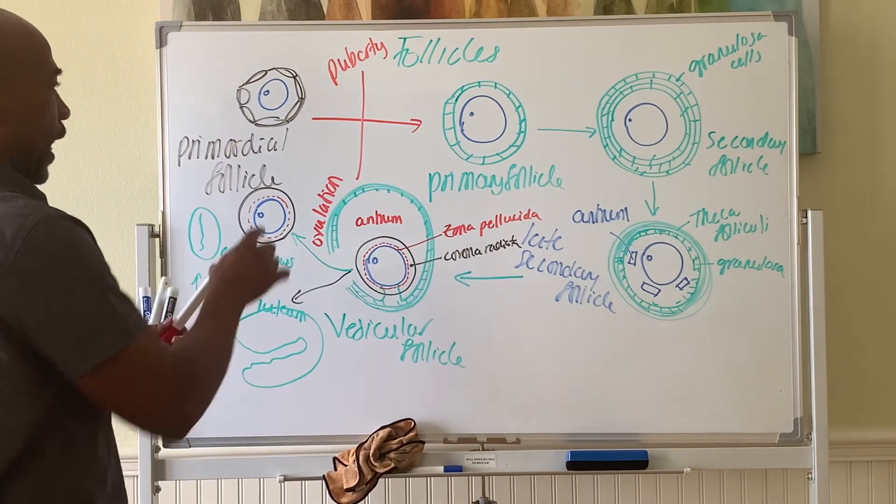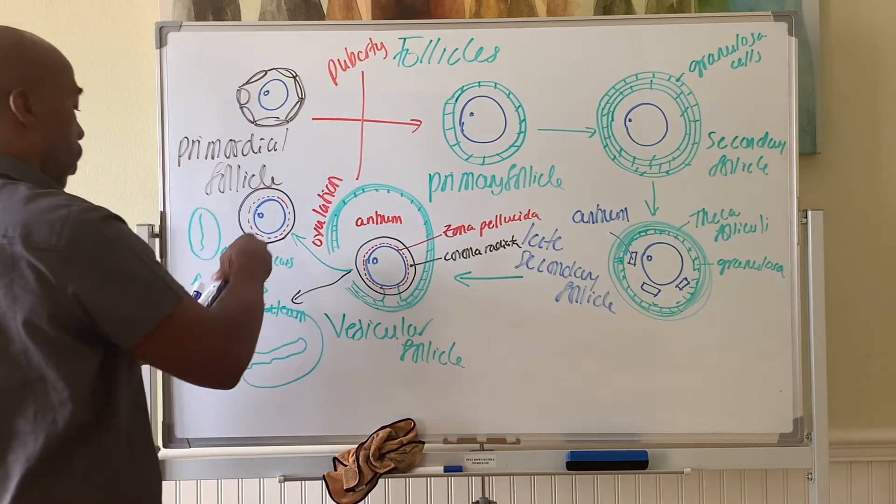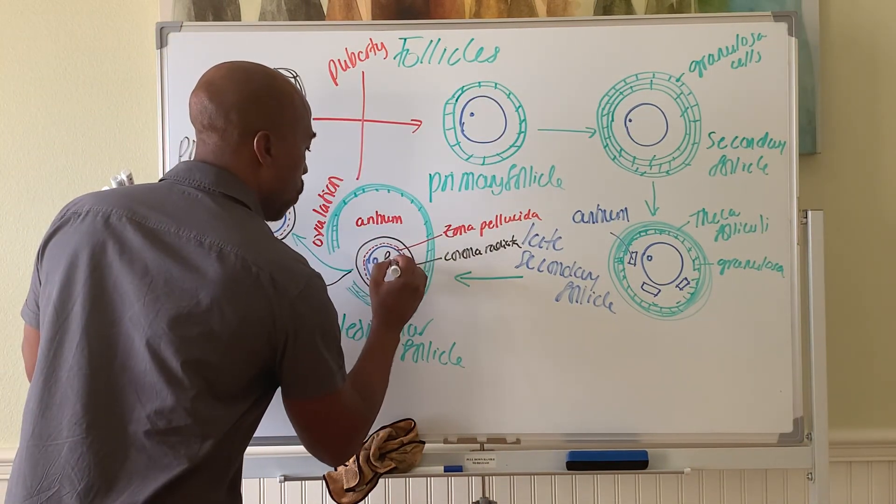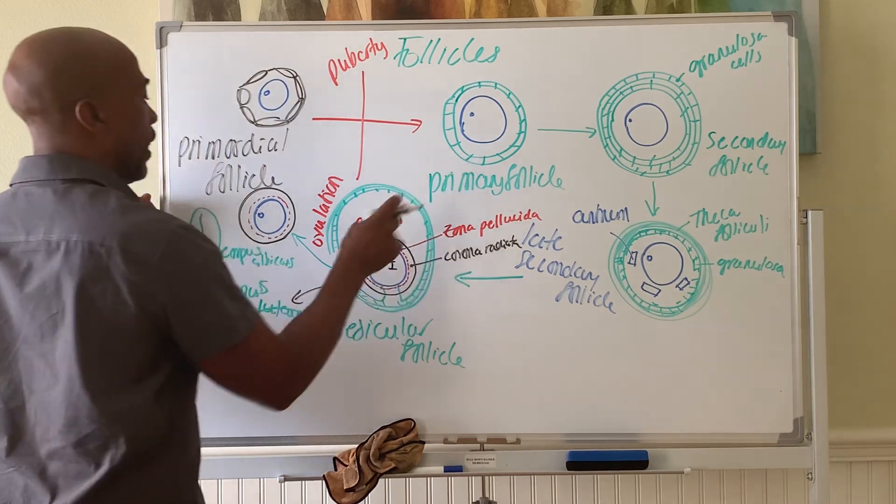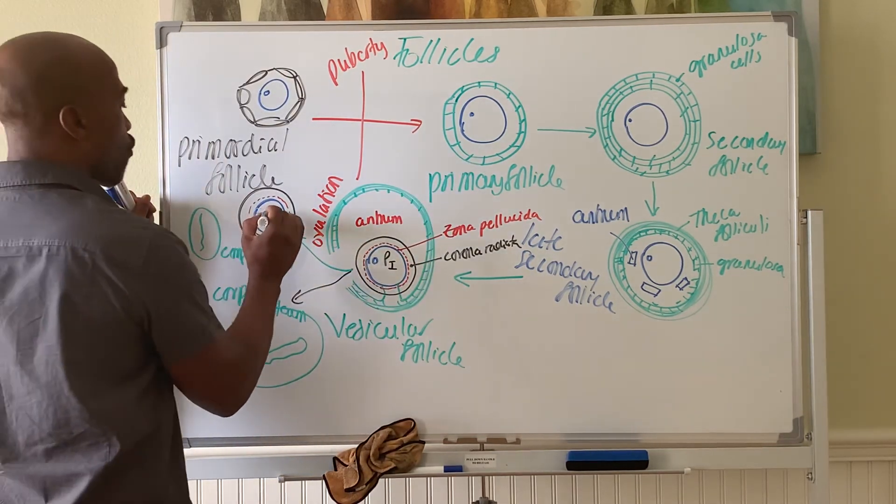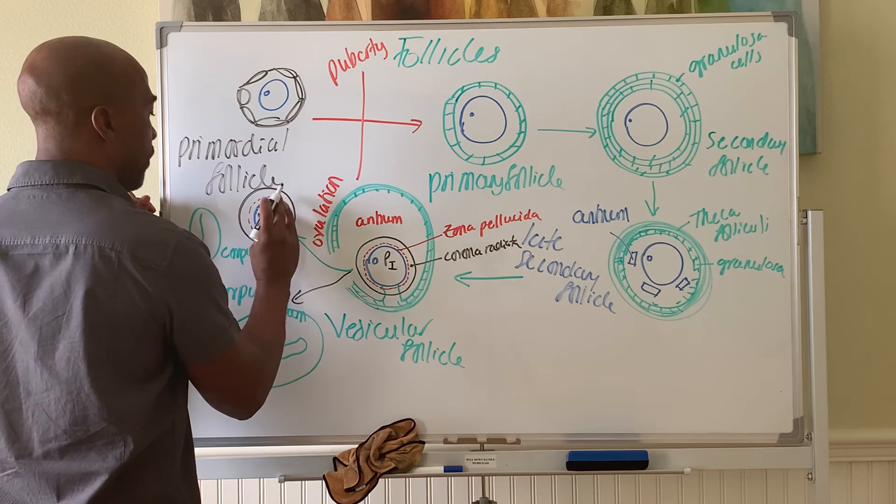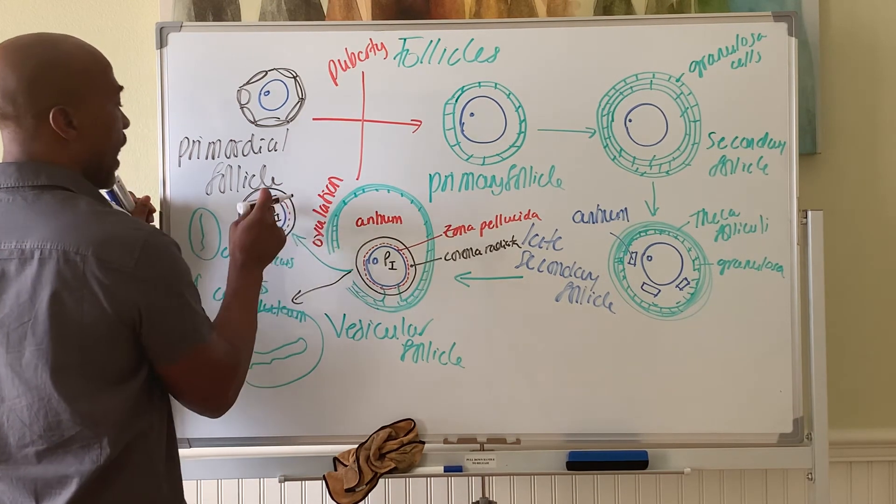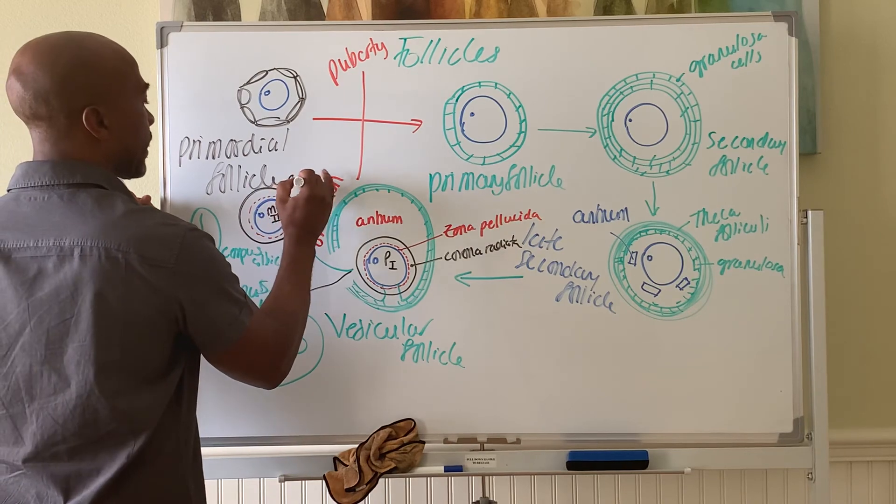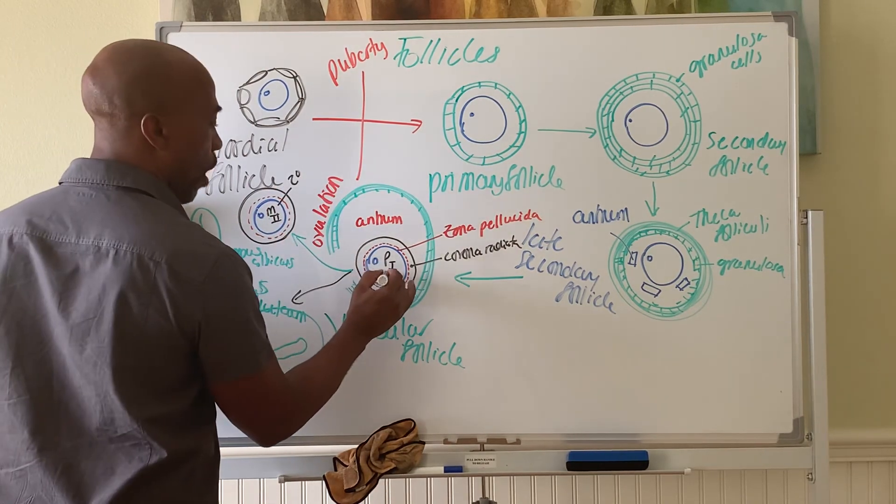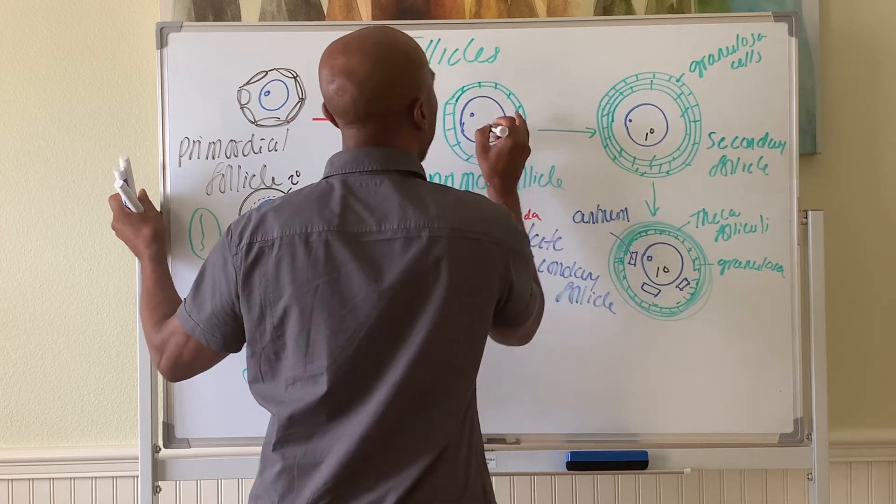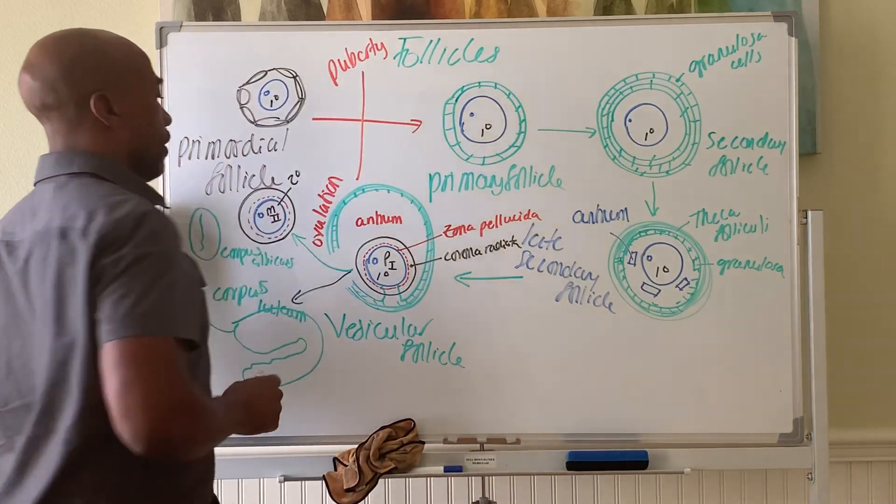Of course, the oocyte all along was arrested in prophase one. All along. Once it's ovulation, it's now arrested in metaphase two. So now, it's actually a secondary oocyte. Before, it was a primary oocyte along the entire time.